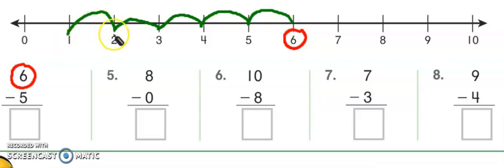You see how I make sure that I always land on the lines? I cannot just land in the middle. I have to go 1, 2, 3, 4, and 5. Where did I land? Number 1, which is my difference.